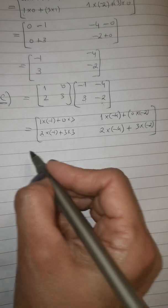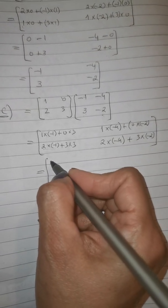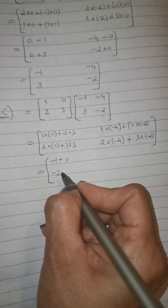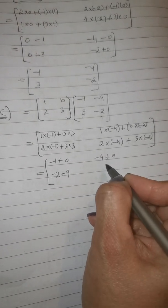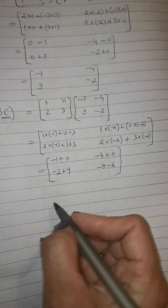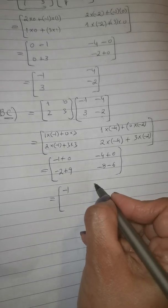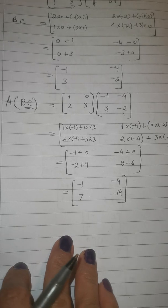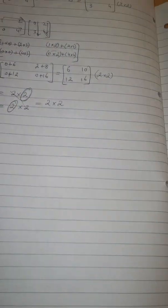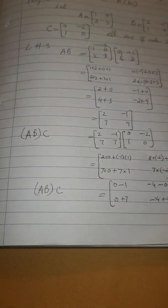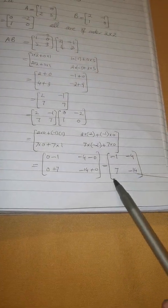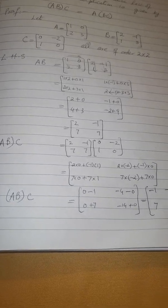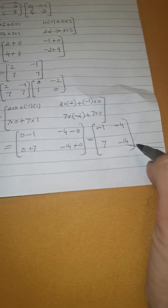Simplifying: -1+0, -2+3×3=9, -1, 4+0 and so on. After adding them, this is the value of A multiplied by BC. When we look at the other side, we have the value of (AB)×C — it is again [-1, -4; 7, -14]. So the answer of (AB)C and the answer of A(BC) are both the same. We write these as result 1 and result 2.